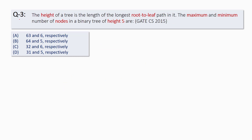Now for the next problem: the height of a tree is the length of the longest root-to-leaf path in it. We need to find the maximum and minimum number of nodes in a binary tree of height 5. For an example binary tree, the longest root-to-leaf path has two connecting edges, so the height of that tree is 2.